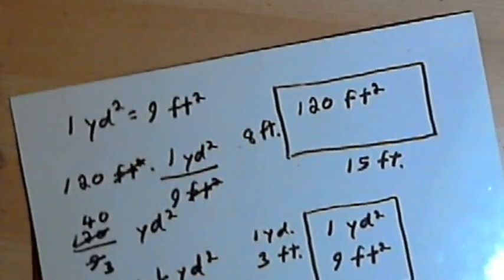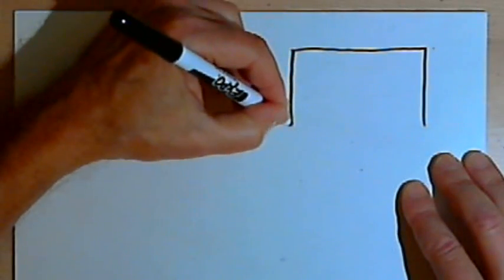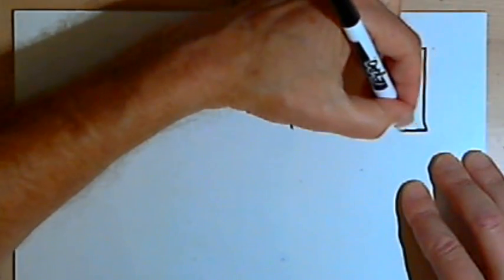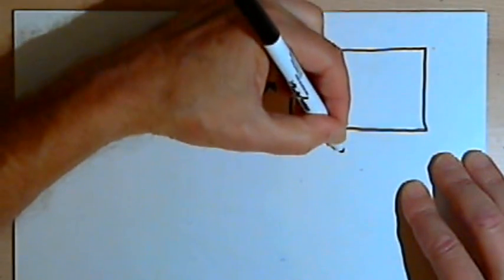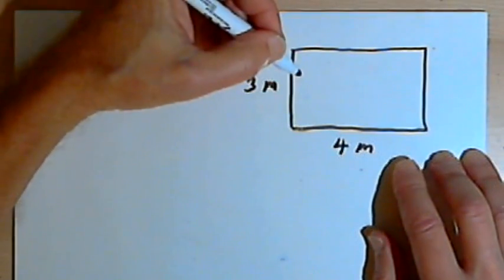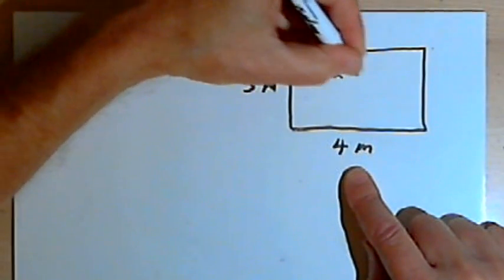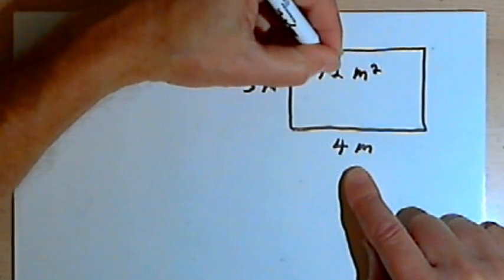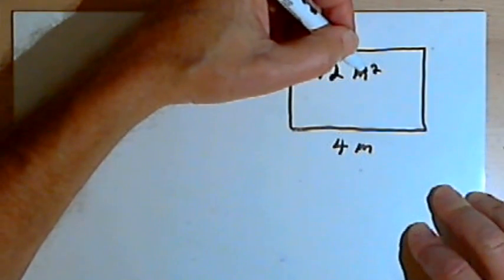Let's do one with the metric system. For the metric system, I'll be dealing with meters and centimeters. Let's say I've got a rectangle that's 3 meters by 4 meters and I want its area in square centimeters. I know its area is going to be 12 square meters — I'm just multiplying 3 times 4 — and I get 12 square meters.